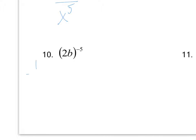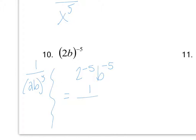Example ten: you could put the expression over one because it's taken to a negative exponent, but I prefer to take everything on the inside to the power on the outside to keep it uniform. Then anything with a negative exponent changes location: result is one over two to the fifth b to the fifth, which is one over 32 b to the fifth. Make sure a negative exponent changes location but does not make a number negative, and write out each step.